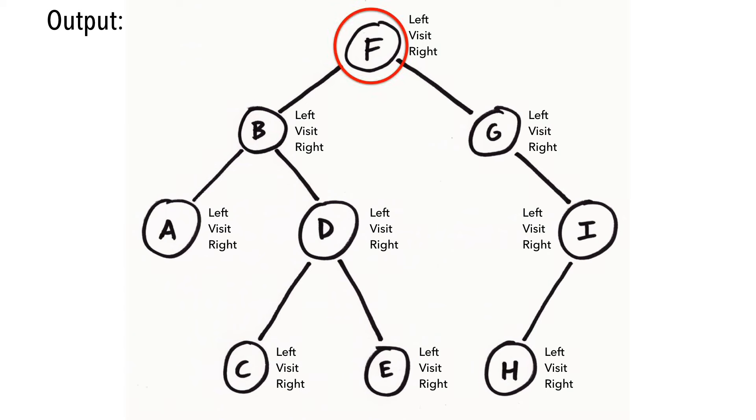Let's start at the top with F. First, we traverse its left subtree. Reaching B, we also travel its left subtree. Now at A, we attempt to go left again. Since it has no left child, we return and print the node.